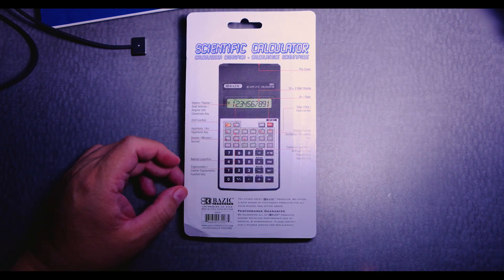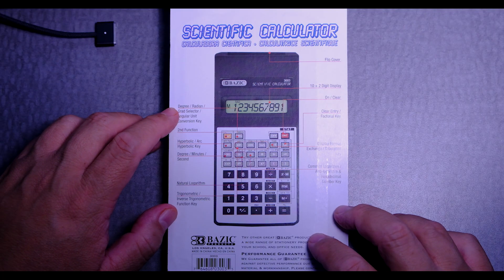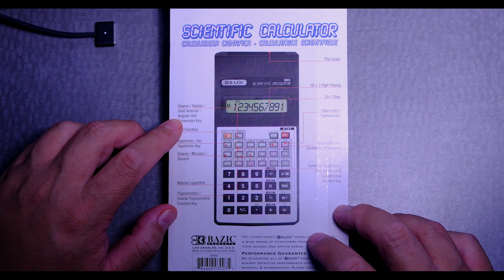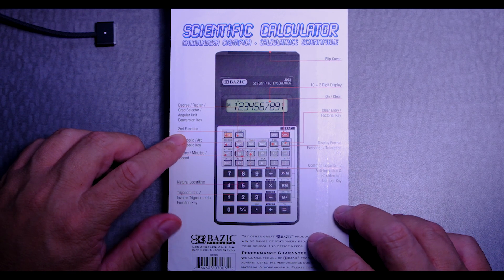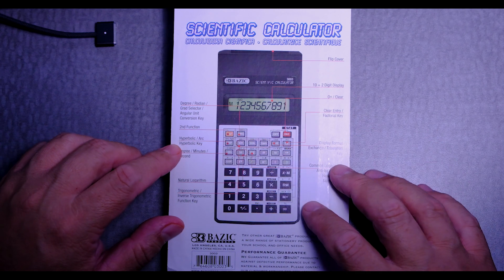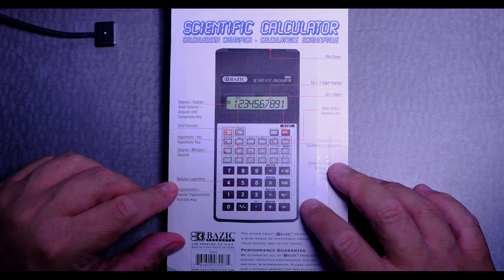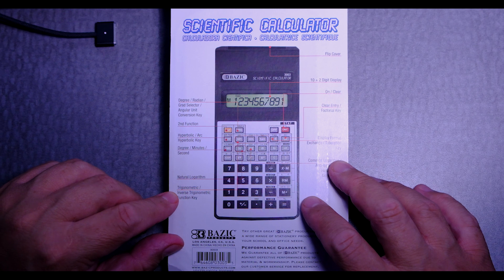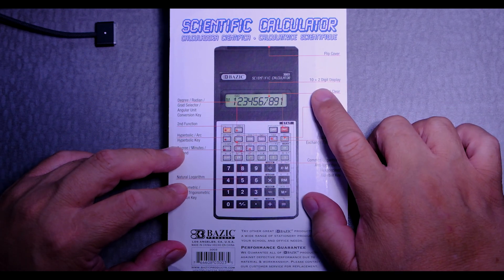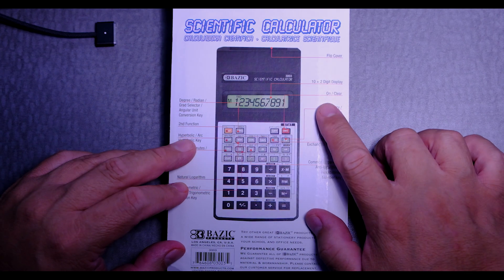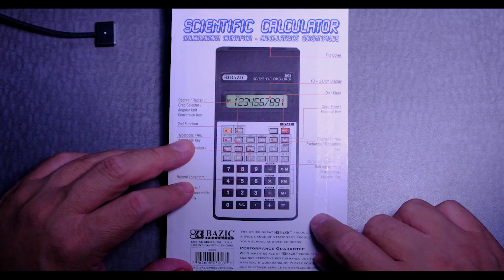It has a few features. It has the degree radiance and gradient selector, two functions, meaning it has like some menus, hyperbolic keys, degrees minutes and seconds, natural logarithms, trigonometric functions, flip cover, 10 plus 2 digit displays, on off and clear, display format, common logarithms.